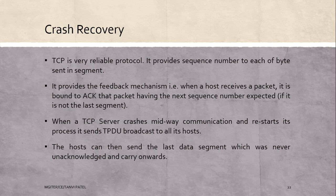Next is crash recovery. TCP is a very reliable protocol; it provides a sequence number to each byte sent in a segment. It provides a feedback mechanism: when a host receives a packet, it is bound to acknowledge that packet with the next expected sequence number. When a TCP server crashes mid-communication and restarts, it sends a TPDU broadcast to all its hosts. The hosts can then send the last unacknowledged data segment and carry onwards. This is the crash recovery mechanism of TCP.